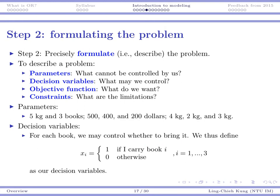I'm going to define x_i as my decision variable, where i goes from 1 to 3. x_i is 1 if I choose to carry book i, and x_i is 0 if I don't. For each book, I decide whether to bring it or not. The reason I need these variables is because I want to precisely describe my constraints and objective functions.